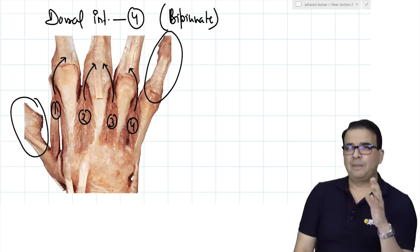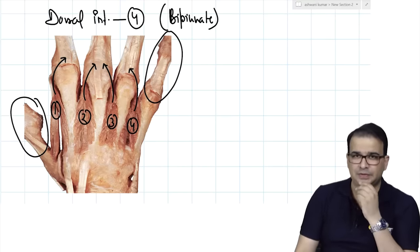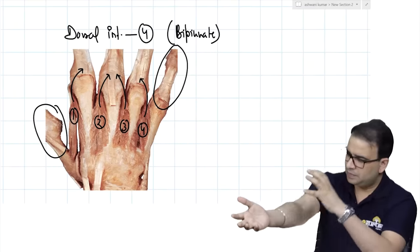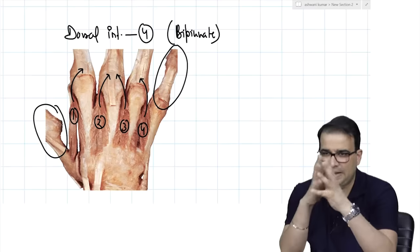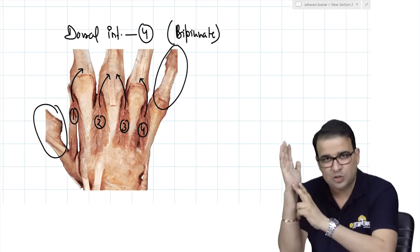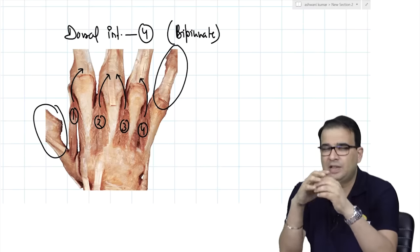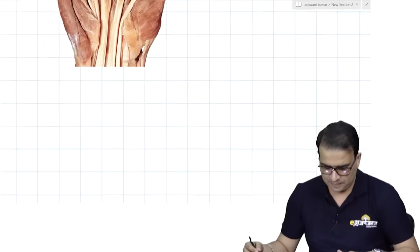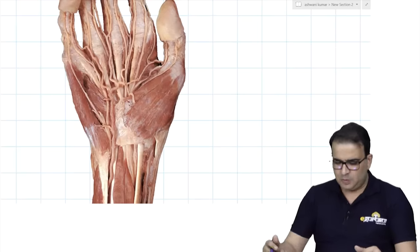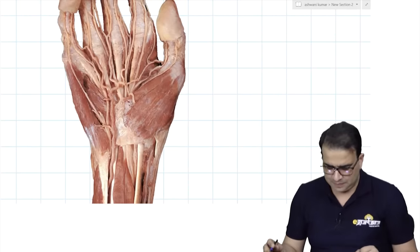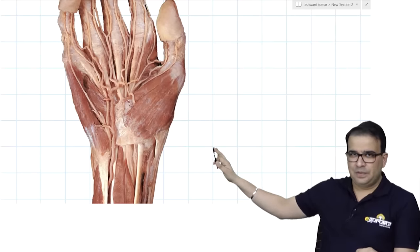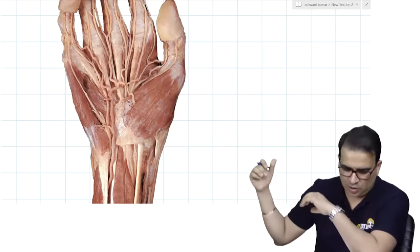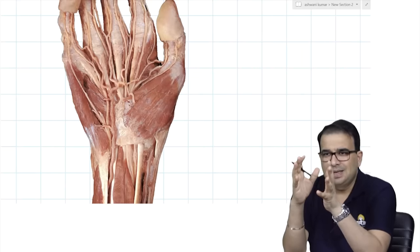All dorsal and palmar interossei are supplied by the ulnar nerve. That covers the muscles of the anterior forearm (superficial, intermediate, deep groups), structures running at the wrist, and the muscles of the hand. Coming to the final point: when nerves and vessels cross the wrist and reach the hand, it can be difficult to differentiate ulnar nerve from ulnar artery, and median nerve from radial artery. The picture shown in the exam had thenar muscles intact and long tendons going to fingers — indicating a very superficial dissection with only the skin and partially the flexor retinaculum removed.